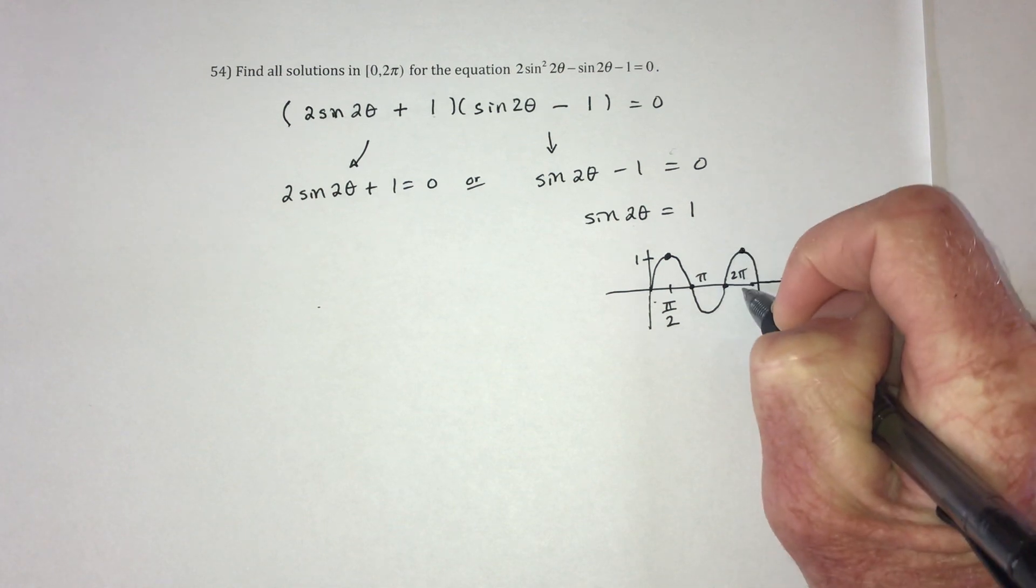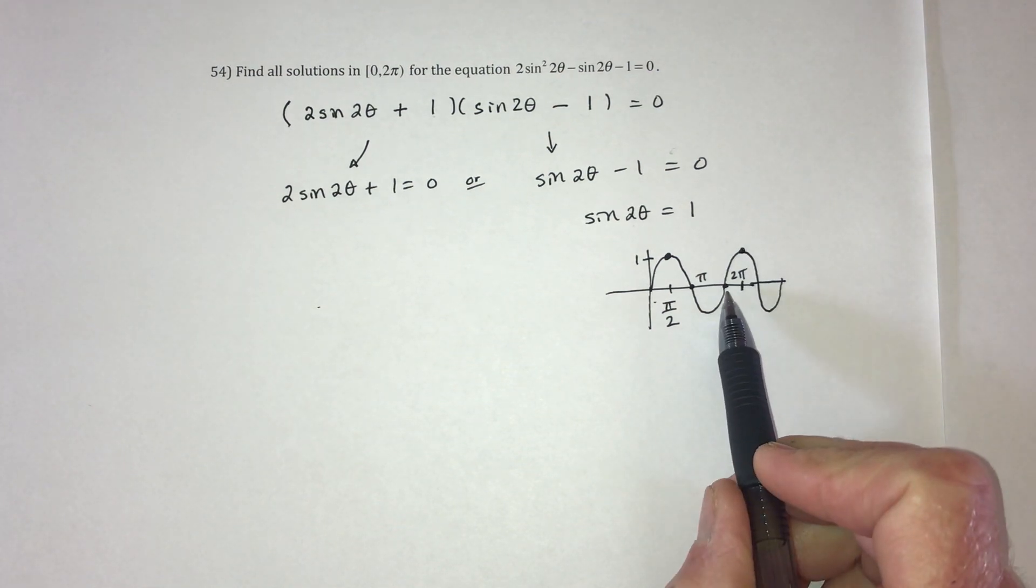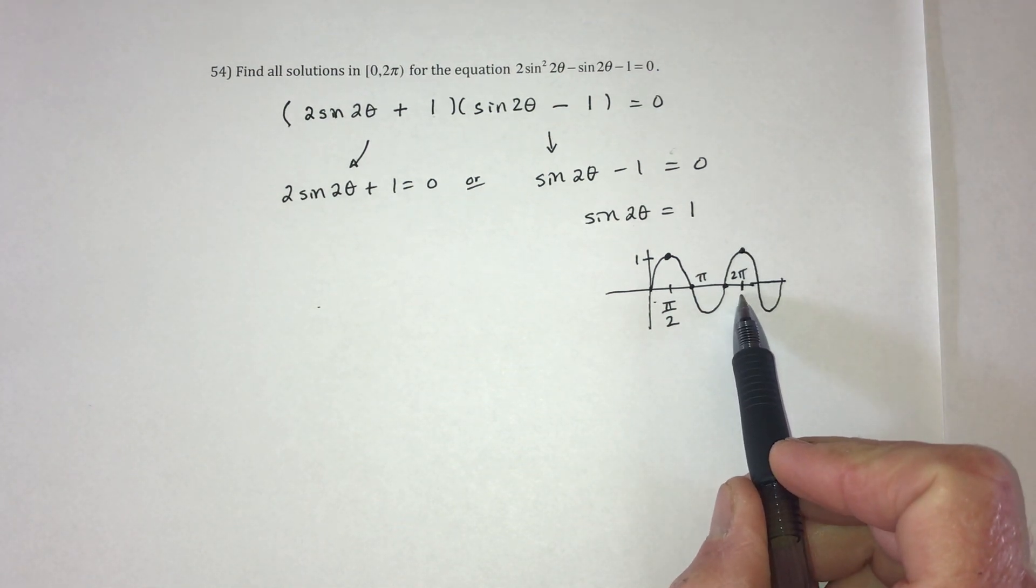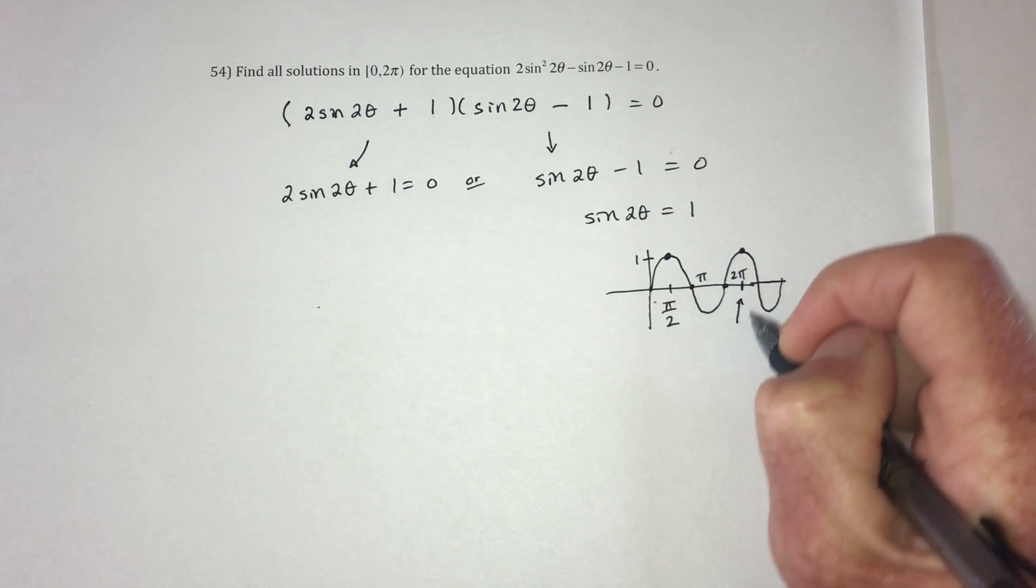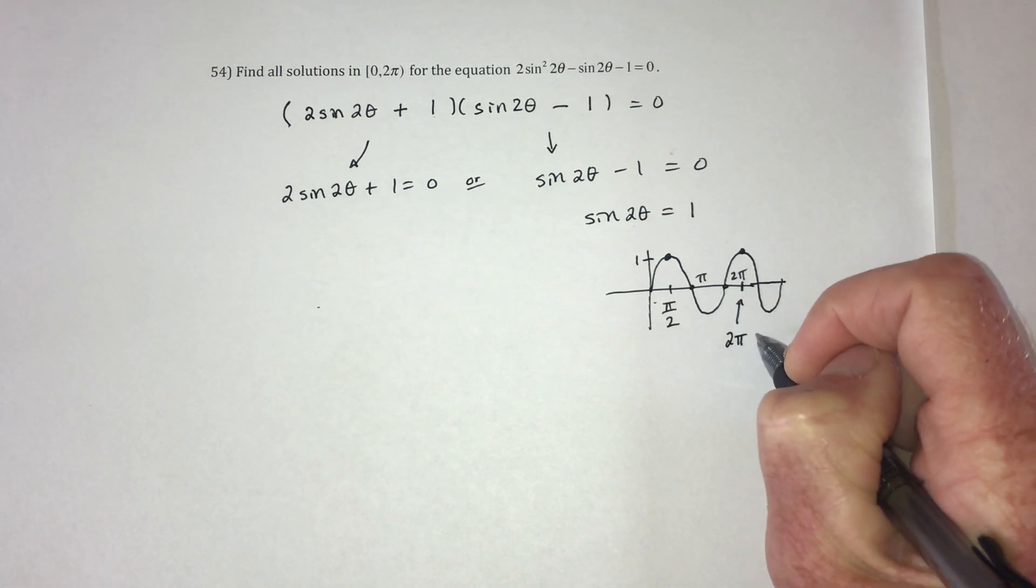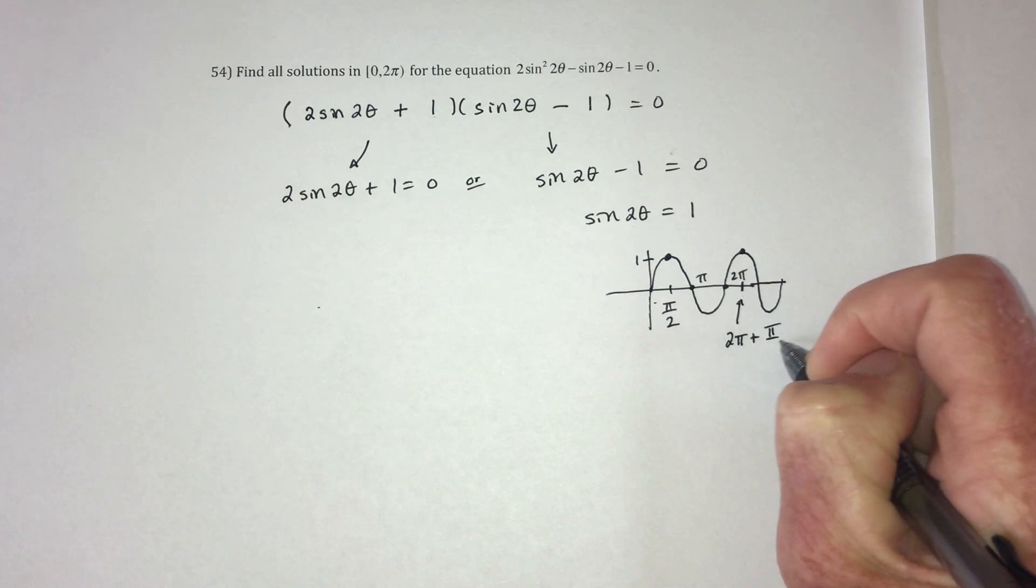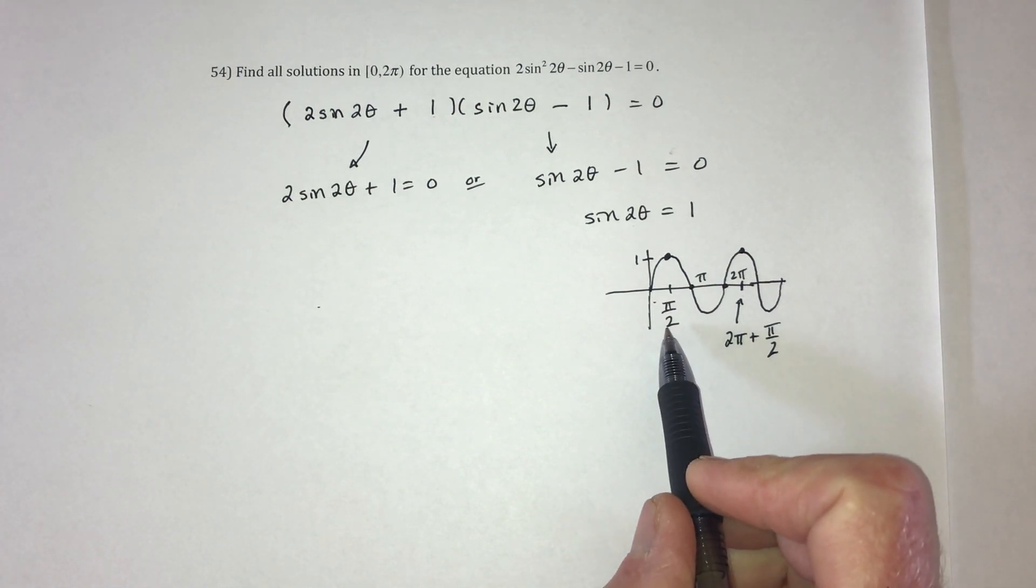And it's going to equal 1 right here. Right here is 2 pi. So this is to the right of it.